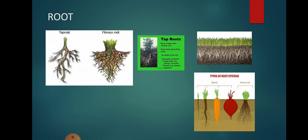Root: it helps the plant stay fixed to the soil. It takes in water and minerals from the soil which are used by the plant for making food. Root is the part of the plant that usually grows below the ground. There are two types of roots: tap root and fibrous root.